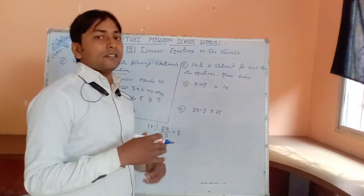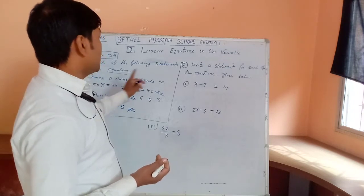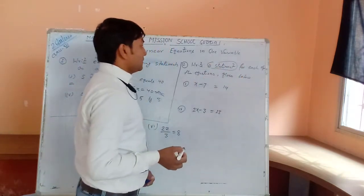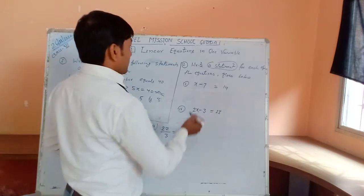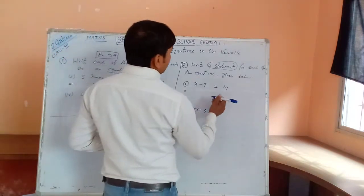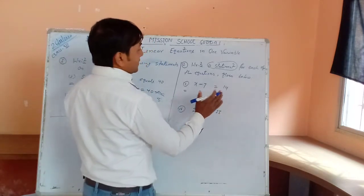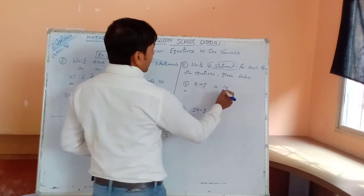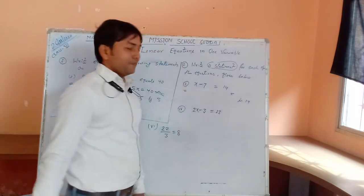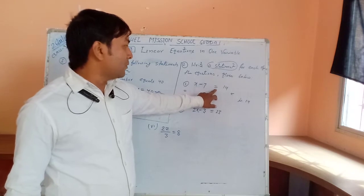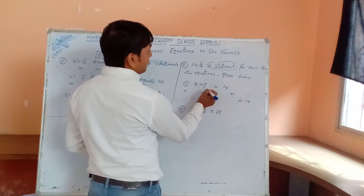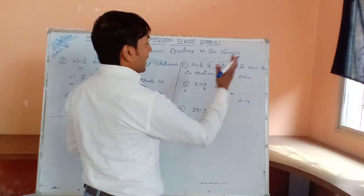The second part of the question says just the opposite: equations are given and you have to write a statement for each equation given below. I always start from the left side. The equal-to symbol means 'is' or 'equals.' For the equation x - 7 = 14, the equals sign means 'each' and 14.